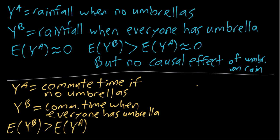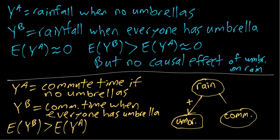What's going on more specifically is there's this rain variable that causes the umbrellas. In particular, it has a positive effect on umbrellas, so the more rain there is, the more umbrellas are getting carried. And then it also separately has a positive effect on commute time.